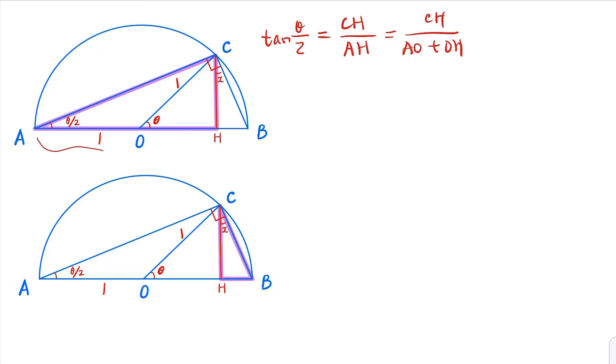Notice that CH here is 1 times sine theta. And AO is the radius 1 plus OH, which is cosine theta. That's the first part of the half-angle for tangent.